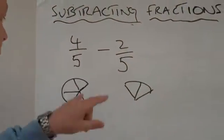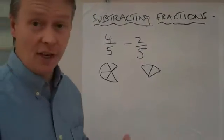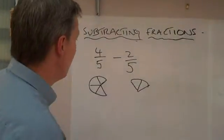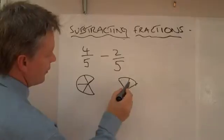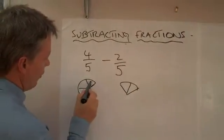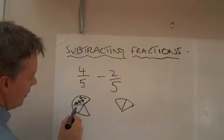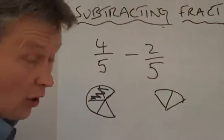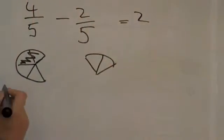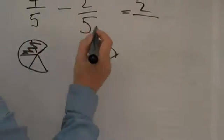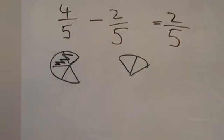Now because the denominators are exactly the same, all we need to do is say, well, if I take two-fifths away from those four, there they are, I'm left with two-fifths. Or, four take away two equals two, and the denominators remain the same, two-fifths.